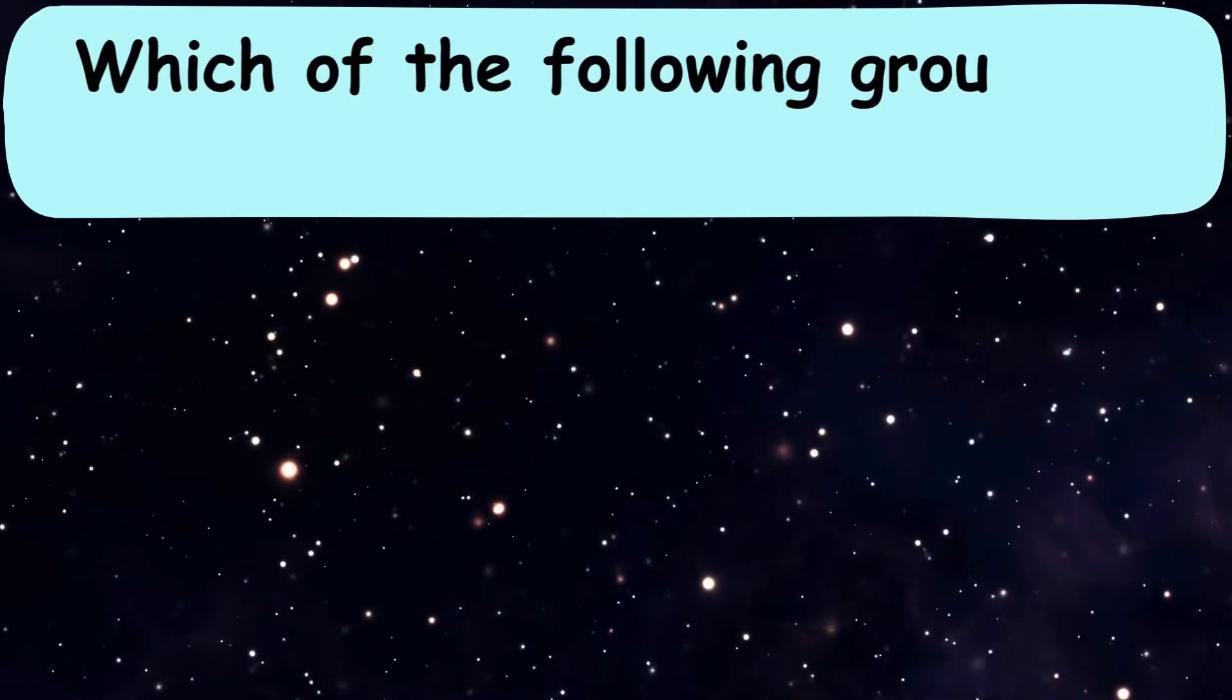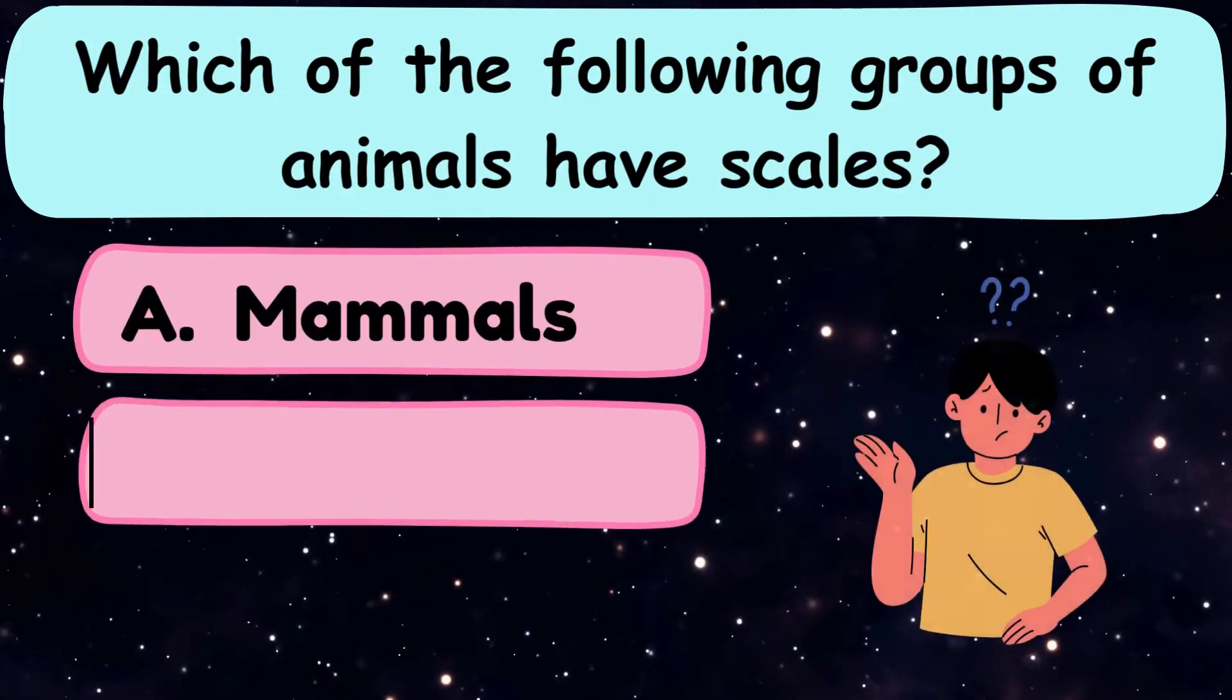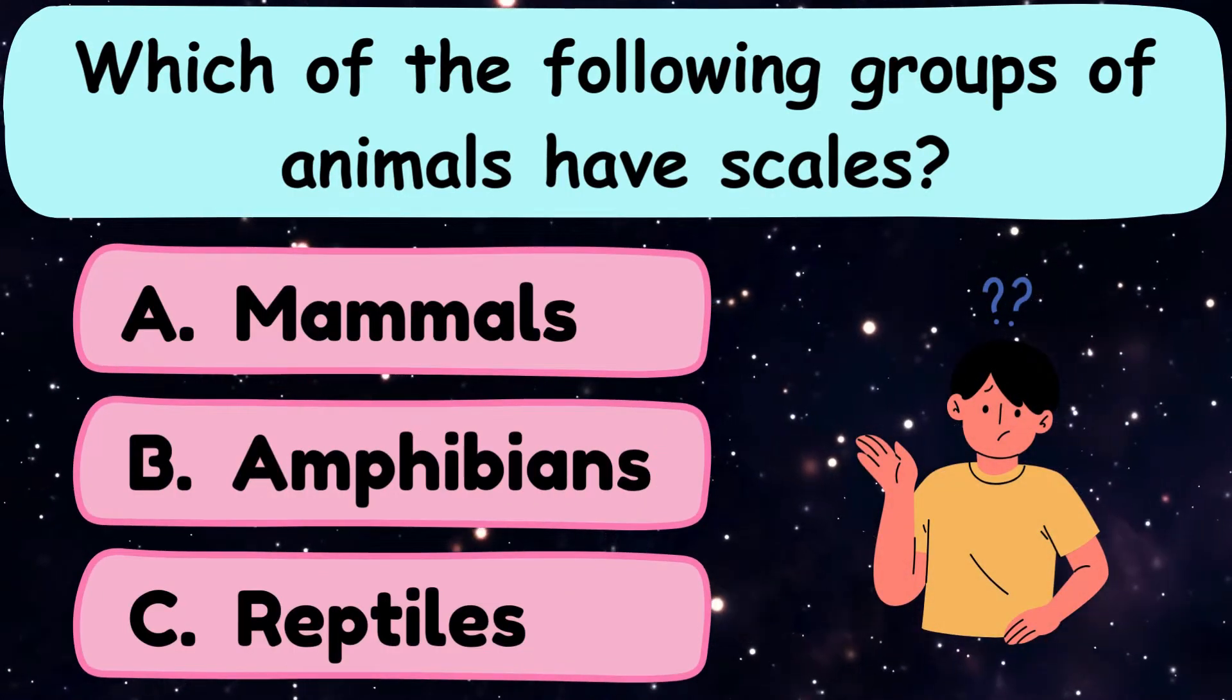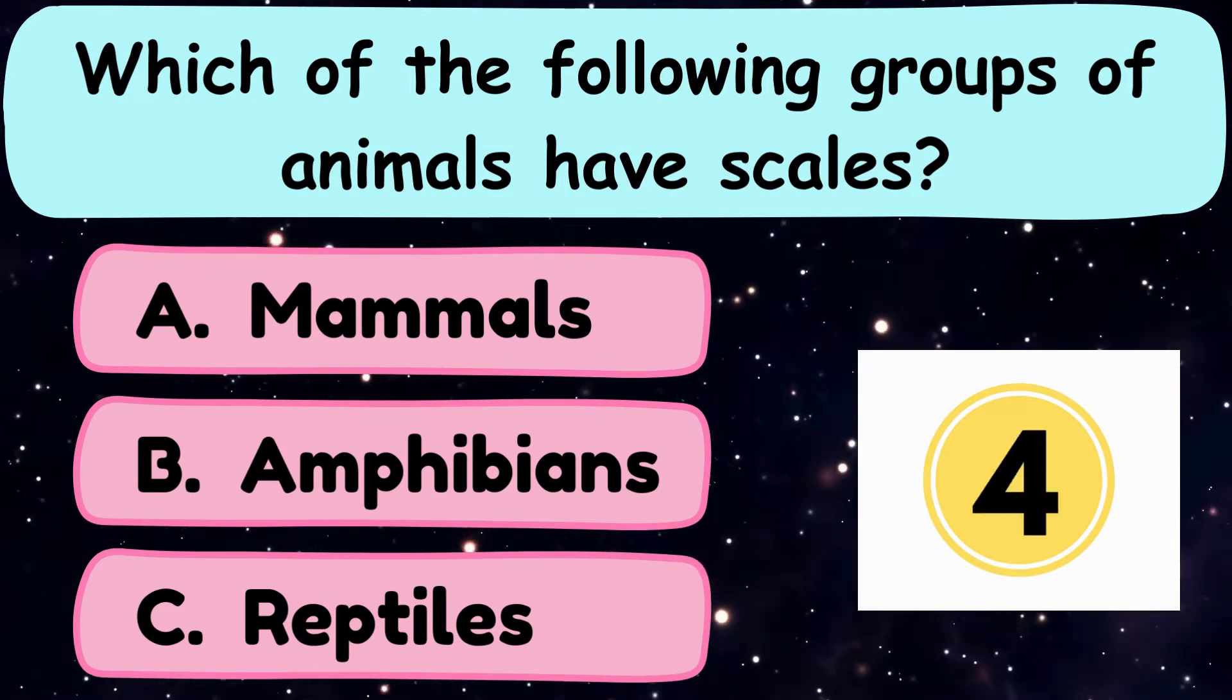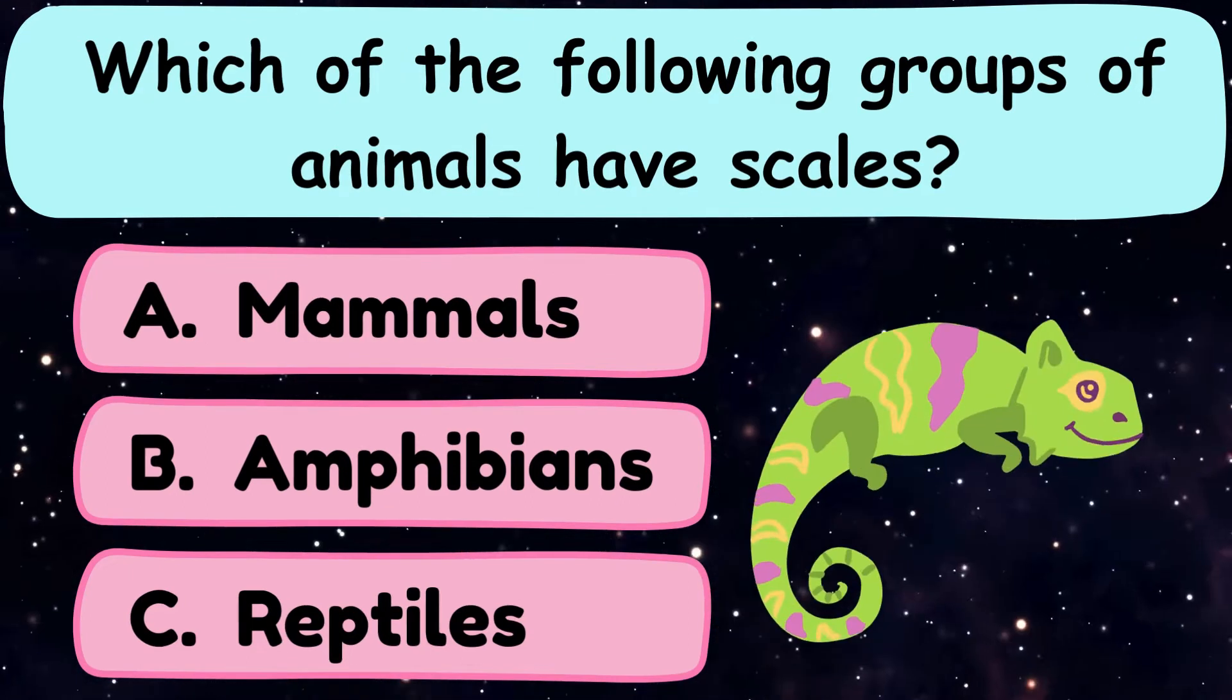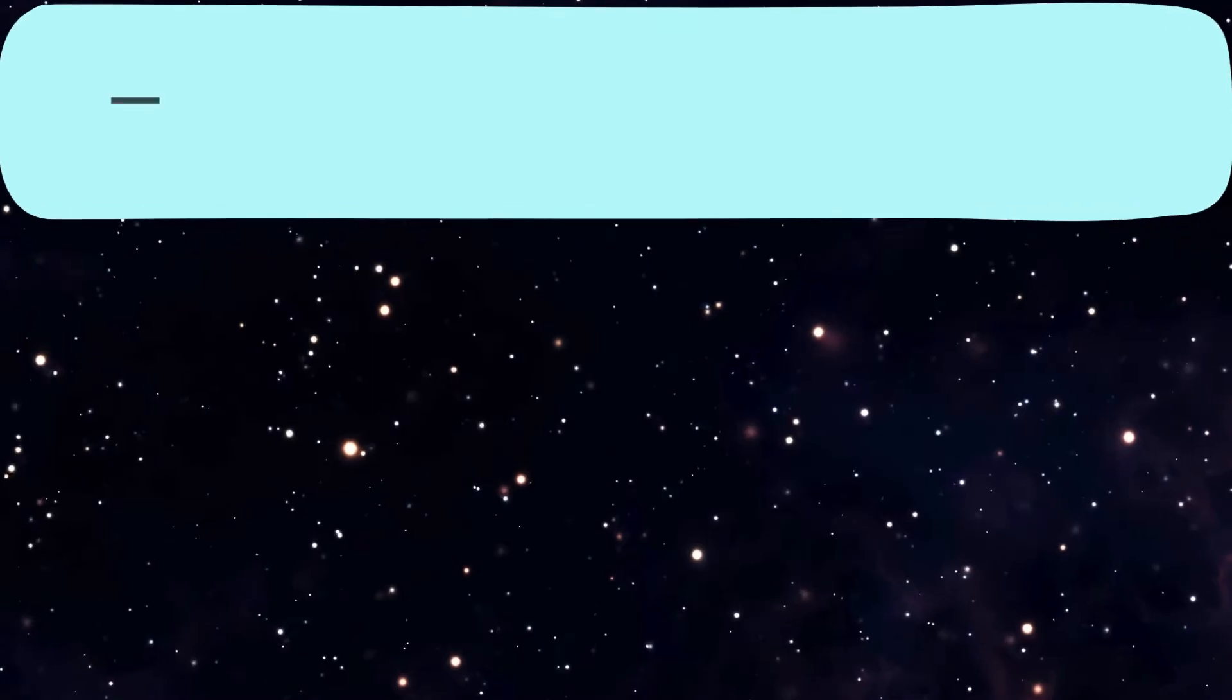Question number 11. Which of the following groups of animals have scales? A. Mammals, B. Amphibians, or C. Reptiles? And the correct answer is option C. Reptiles.